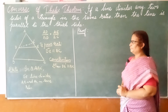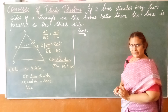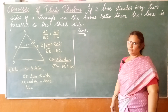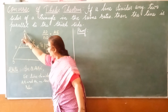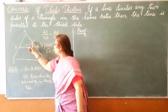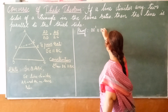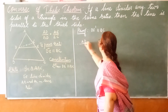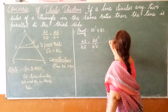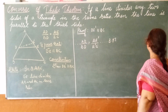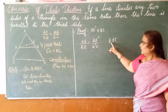Now let us prove this with a suitable reason. Since I drew DE' parallel to BC, I have to recall Thales theorem: if a line is drawn parallel to any side of a triangle, it divides the other two sides proportionally. So by the Basic Proportionality Theorem (BPT), AD by DB is equal to AE' by E'C. This is equation 1.